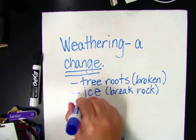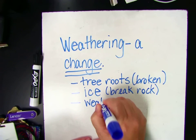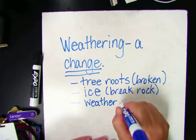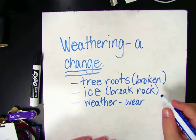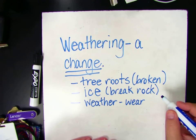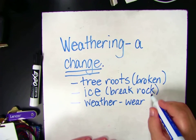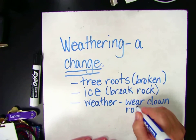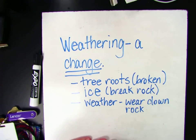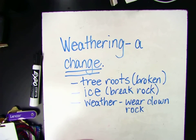We also talked about the weather wearing rock down. Water and wind — like wind with sand in it — will wear down rock and make it smooth. If you remember the video we saw about the Appalachian Mountains, it showed how high they used to be hundreds of thousands of years ago, and now they're quite low compared to what they used to be. They got worn down by the weather.